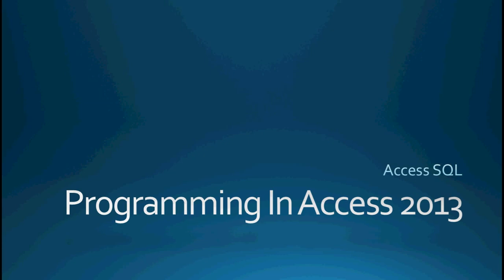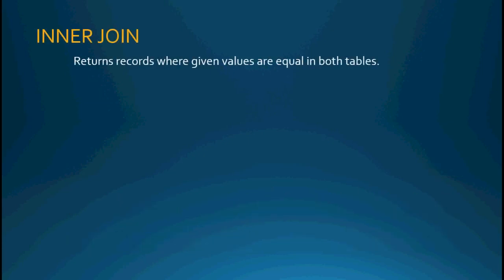The most basic join statement is the inner join. The inner join returns records where given values are equal in both tables. We're going to be taking two tables and comparing a field from each one of those tables, and anywhere where those two values are equal, we're going to return the results from those two tables.